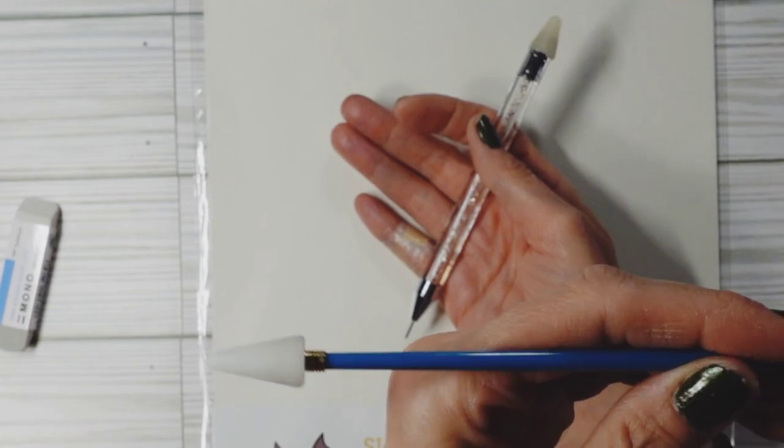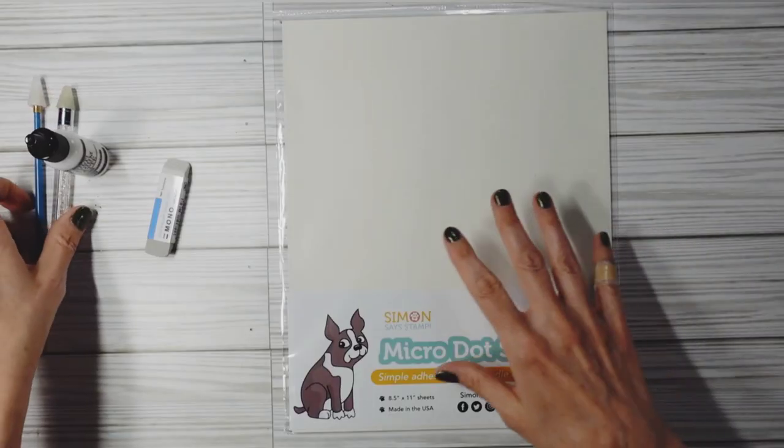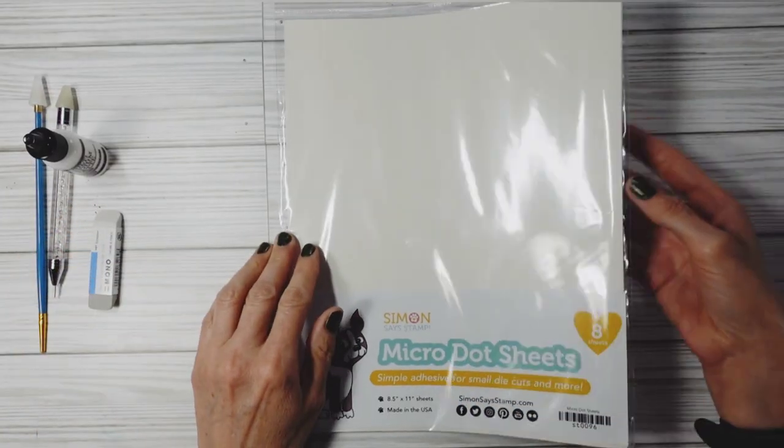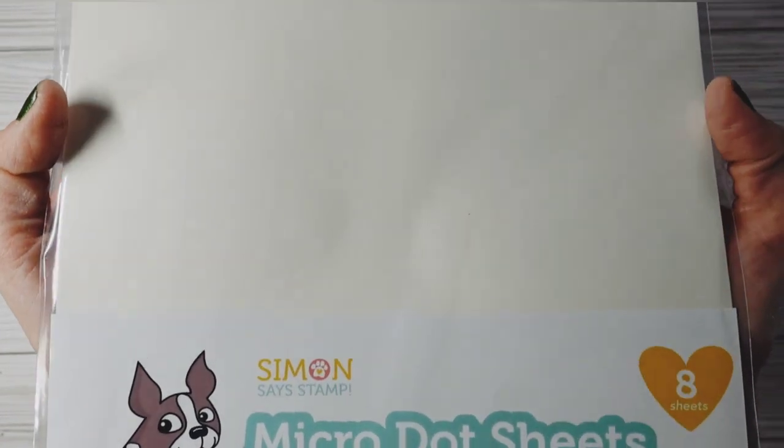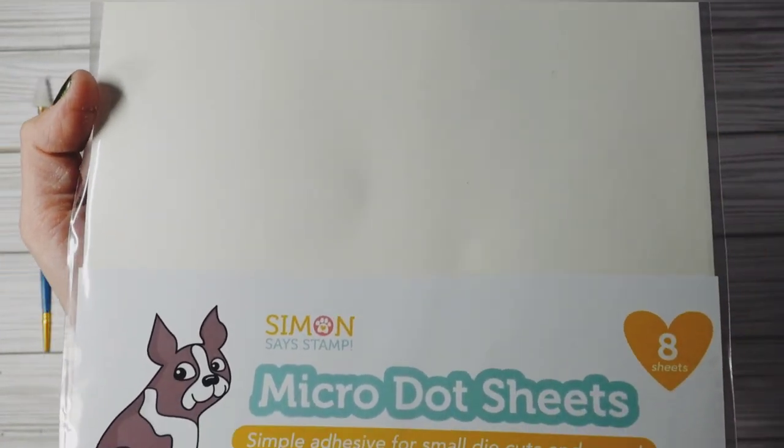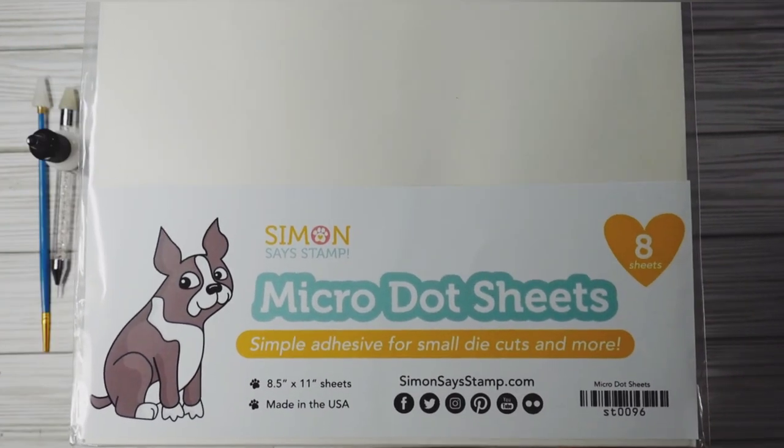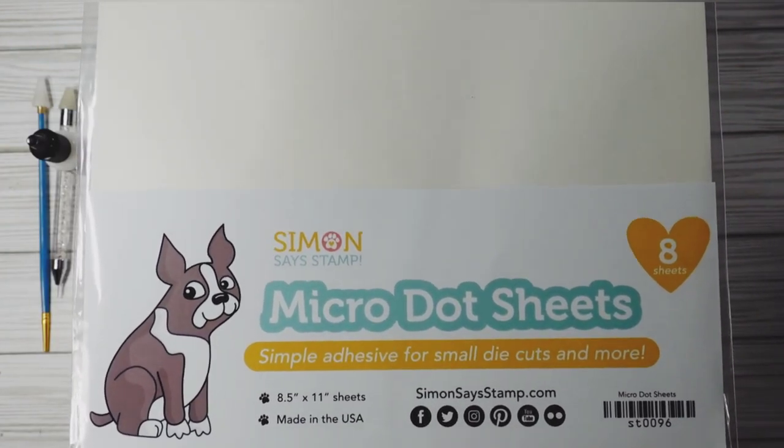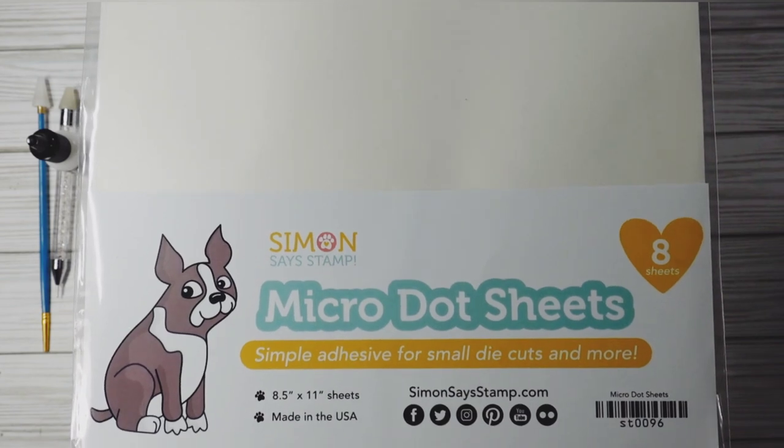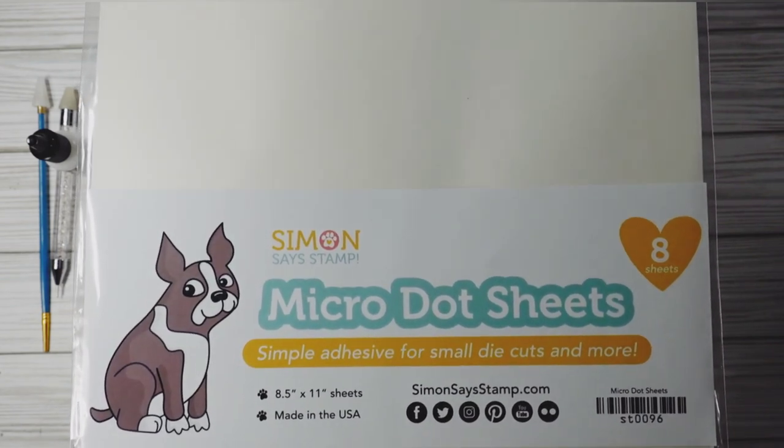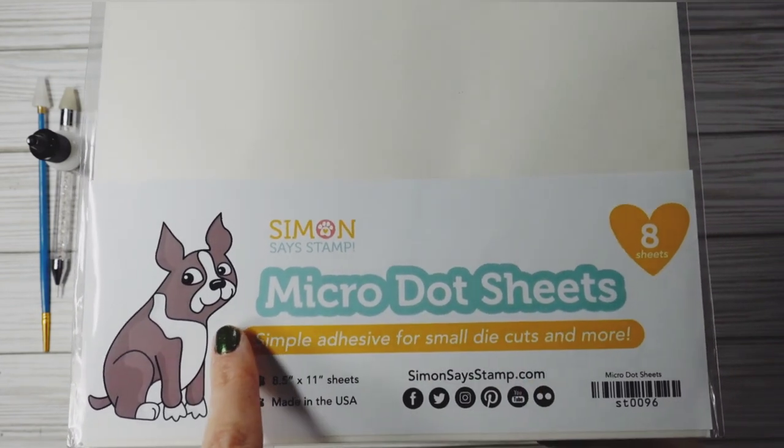This is the newest addition to the craft room, and I am so glad I found it. I finally got a hold of Simon Says Stamp micro dot sheets, and the number one thing I can tell you is this is absolutely perfect with vellum. You do not see the dots because they're exactly what they say they are—very teeny tiny.